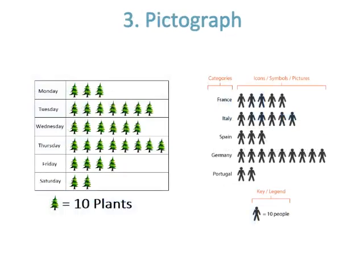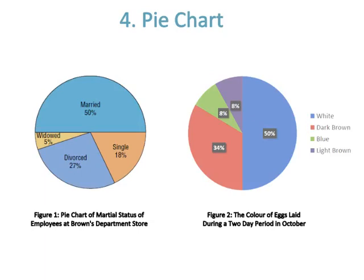Number three is pictograph. In the first diagram, the answer is 300 plants planted in a week, while in diagram two, 250 players participated in a football game from five countries. Number four is pie chart. Example one shows a pie chart without legend: single people are 18%, married are 50%, widowed are 5%, and divorced are 27%. Example two includes a legend with percentages for white, dark brown, blue, and light brown: 50%, 34%, 8%, and 8%, respectively.